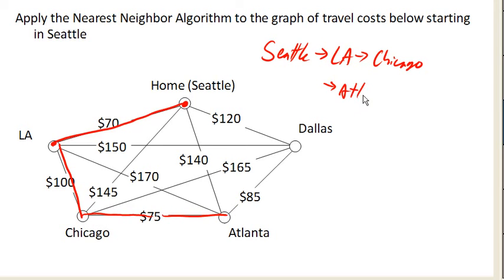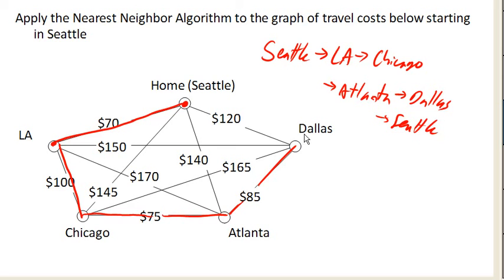Atlanta. Then we really only have one option at this point, and that's to go to Dallas, because it's our only unvisited city. From there, we'll return home to Seattle, and that completes our circuit. Now we've visited every city. Total cost, if we add these up, is $450 — which is insanely cheap.